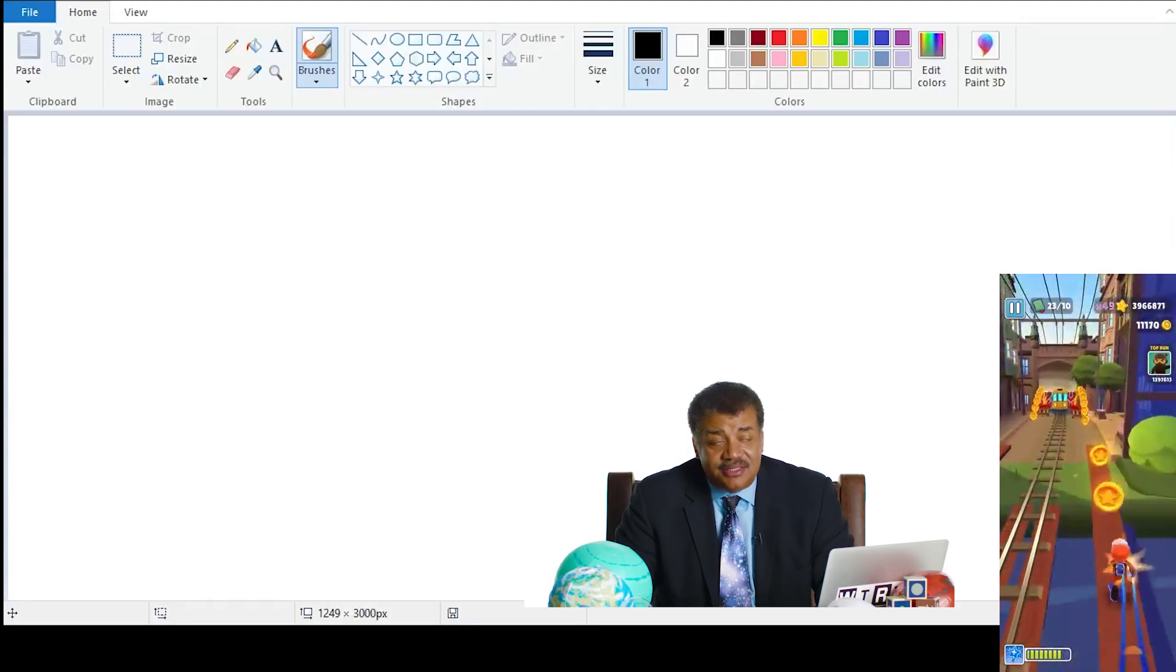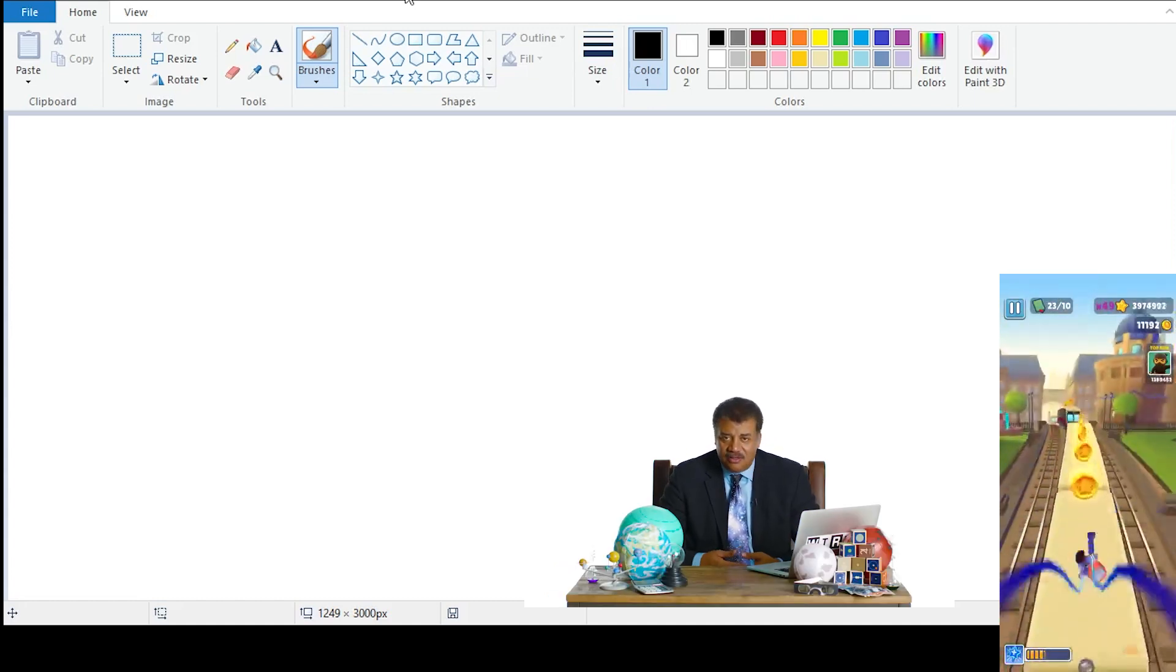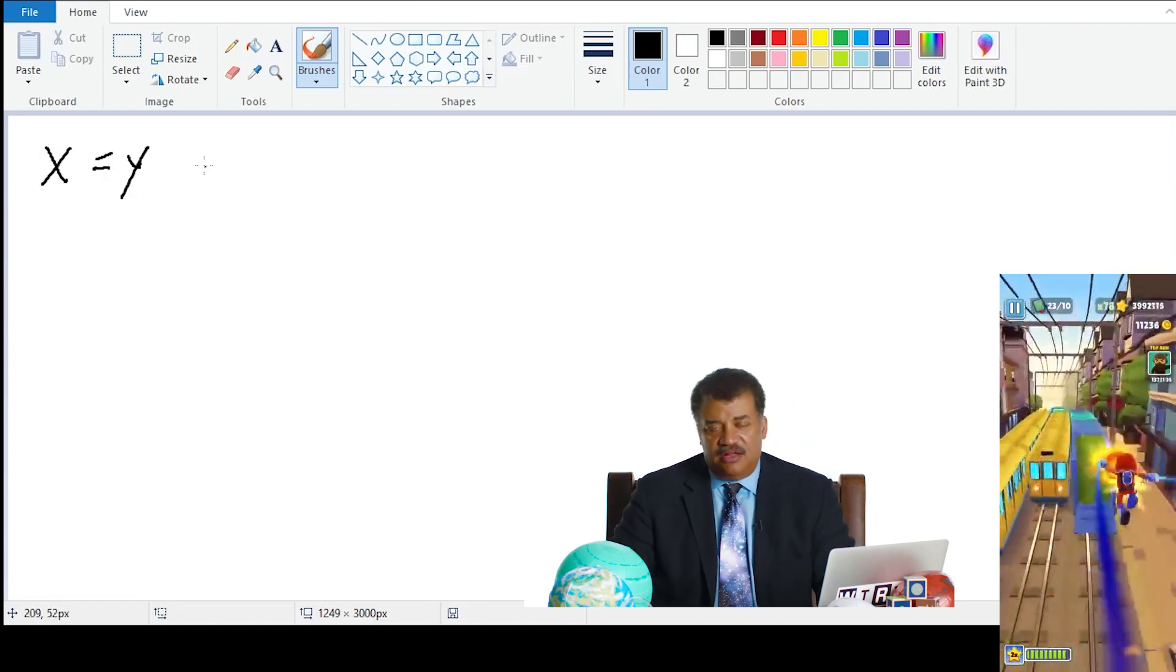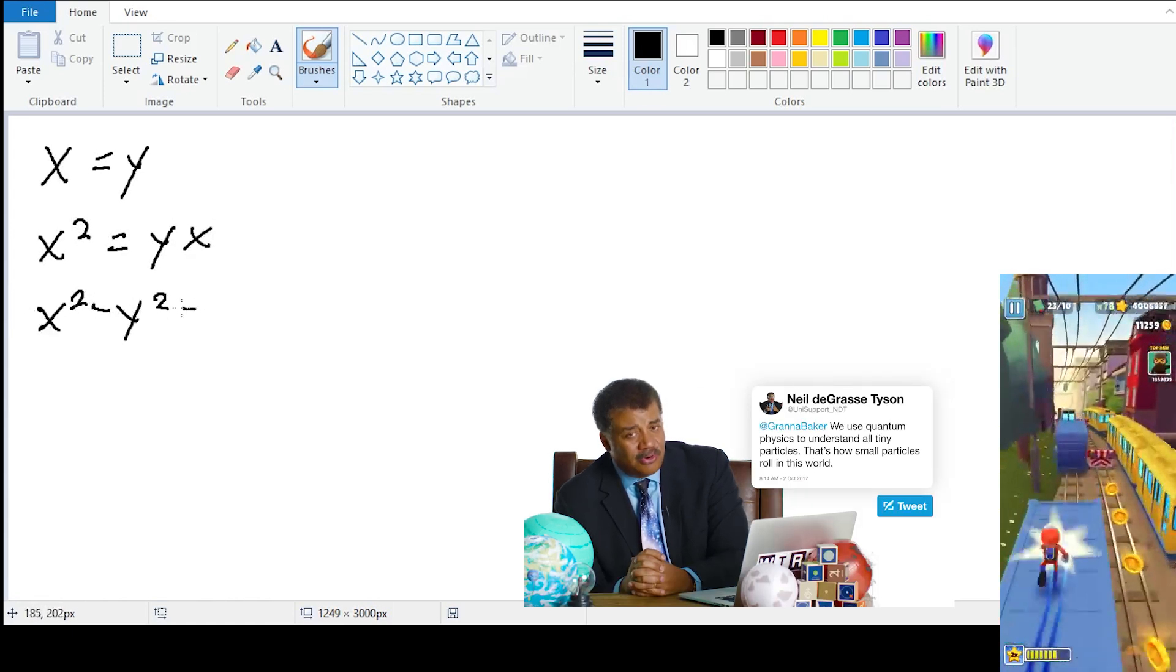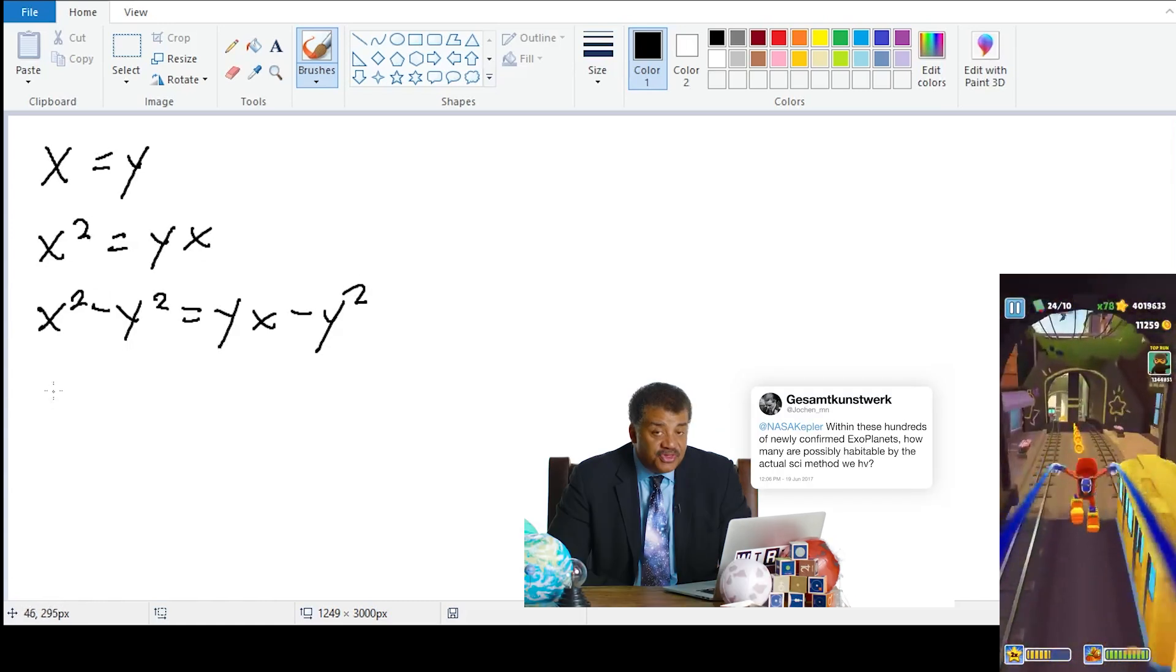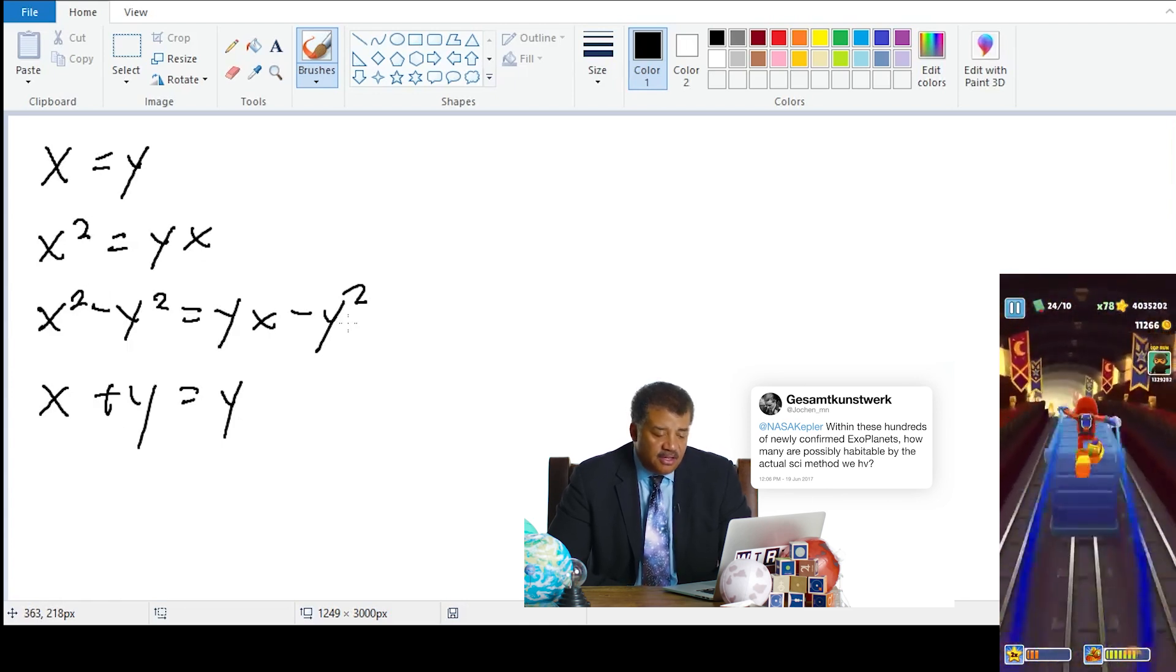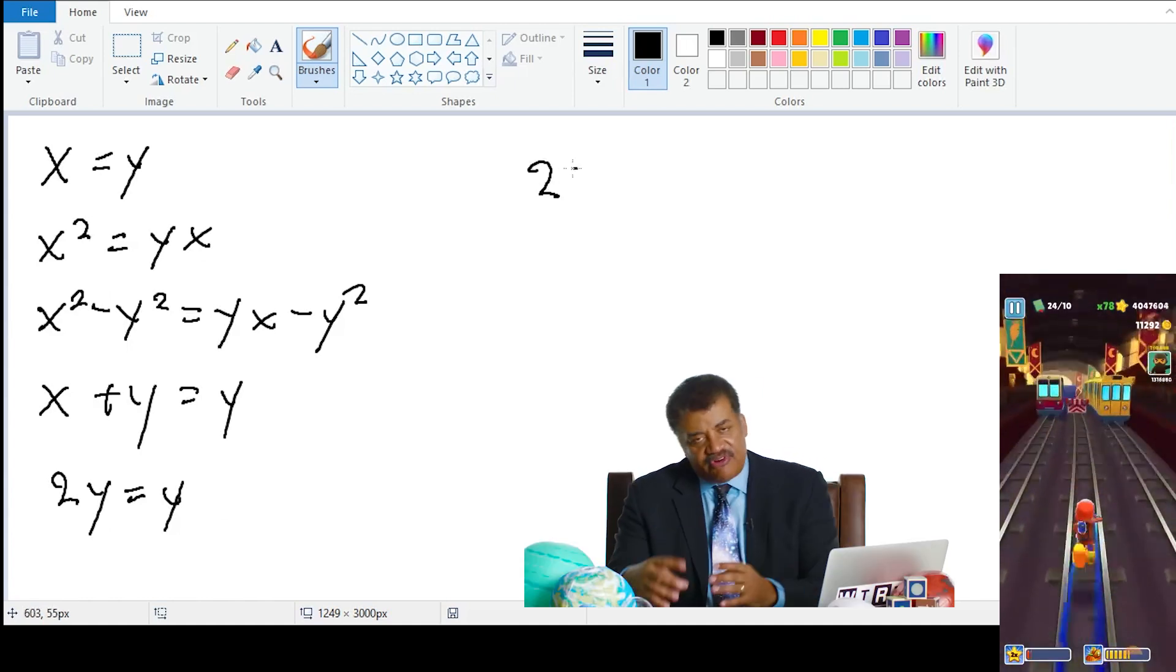Let's see how we can go about proving Terence Howard's claim that 1 times 1 equals 2. Consider two non-zero numbers, x and y, such that x equals y. Let's multiply both sides by x. And now we'll subtract y squared. Then we'll divide by x minus y to get x plus y equals y. Since x equals y, we can rewrite this as 2y equals y. Dividing by y shows that 2 equals 1.